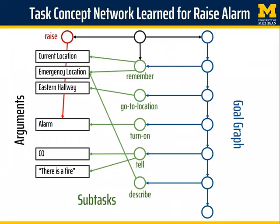Once again, the agent learns a task concept network, although this time the goal graph is more linear. One noteworthy capability of Rosie is that it learns tasks that include communicative and mental actions. In this example, it remembers the location of the fire for later and is able to describe it to the CO. In addition, it learns a general initiation condition — whenever you see a fire — which can supersede normal task execution.